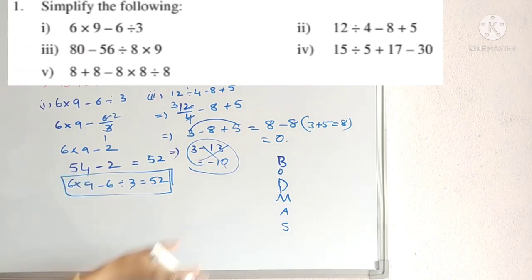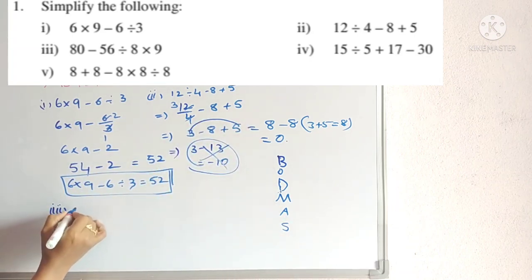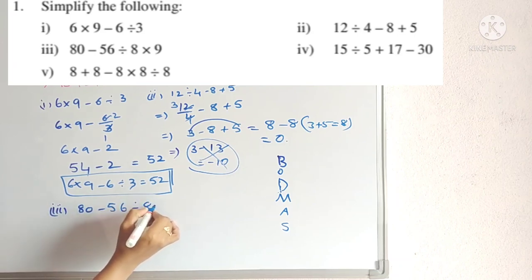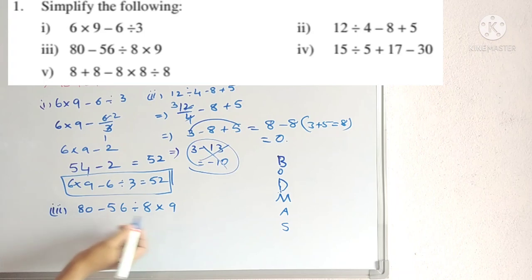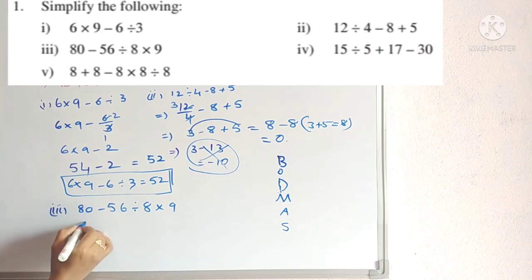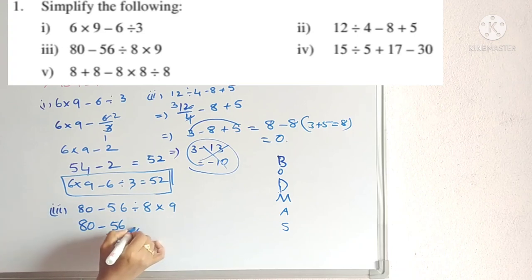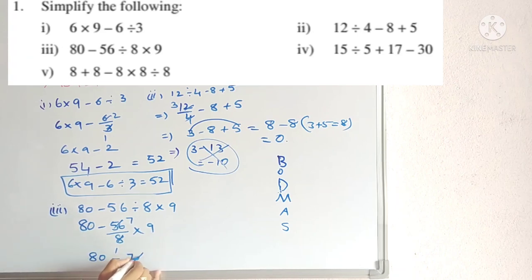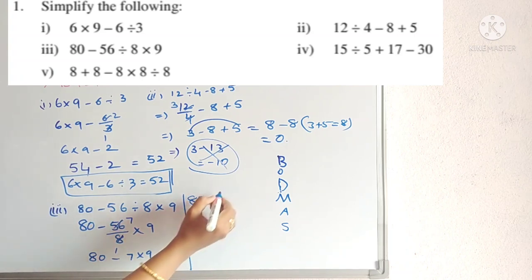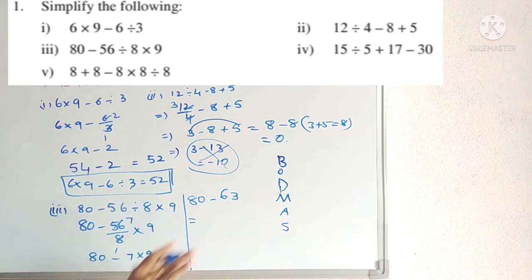Third problem: 80 − 56 ÷ 8 × 9. Operations: subtraction, division, multiplication. By BODMAS, do division first: 56 ÷ 8 = 7. So we get 80 − 7 × 9. Now multiplication and subtraction, do multiplication first: 7 × 9 = 63. Then 80 − 63 = 17. The answer is 17.